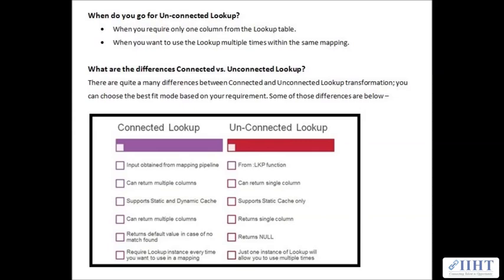What are the differences between connected and unconnected lookup? There are quite many differences. You can choose the best fit based on your requirements. The connected lookup inputs are obtained from the mapping pipeline, while in unconnected lookup the input is obtained from the colon lkp function. Connected lookup can return multiple columns while the unconnected lookup can return only a single column. The connected supports static and dynamic cache while the unconnected supports static cache only.